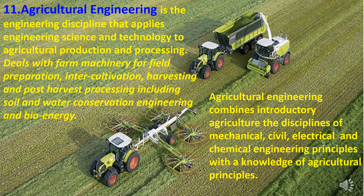The eleventh branch of agriculture is agriculture engineering. Agriculture engineering is the engineering discipline that applies engineering science and technology to agricultural production and processing. It deals with farm machinery for field preparation, inter-cultivation, harvesting and post-harvest processing including soil and water conservation, engineering and bioenergy. Agriculture engineering combines the disciplines of mechanical, civil, electrical and chemical engineering principles with knowledge of agriculture principles.